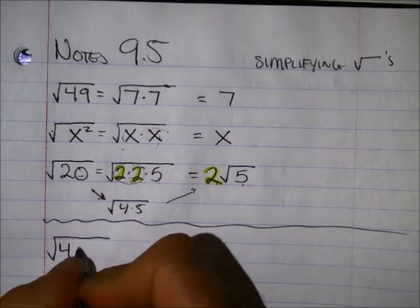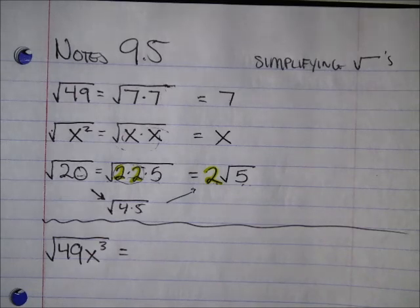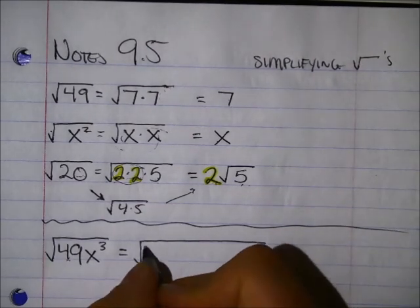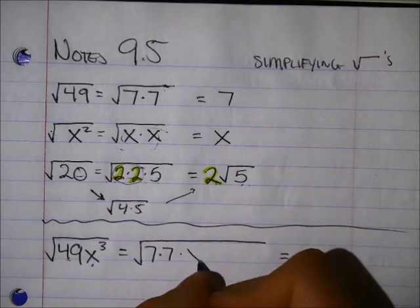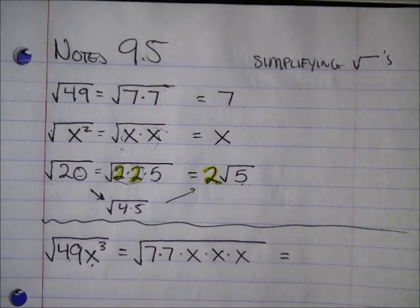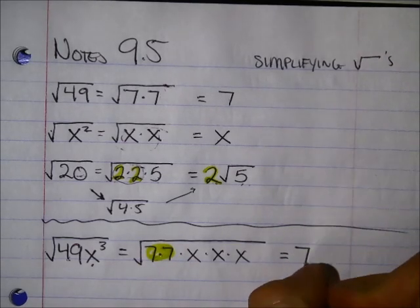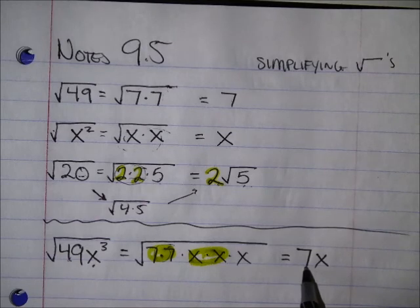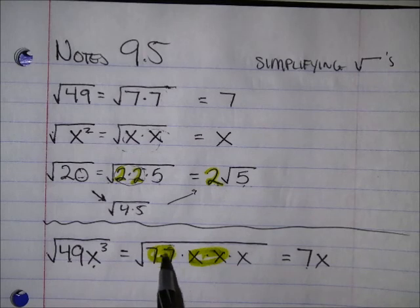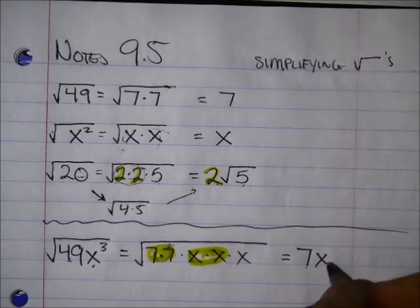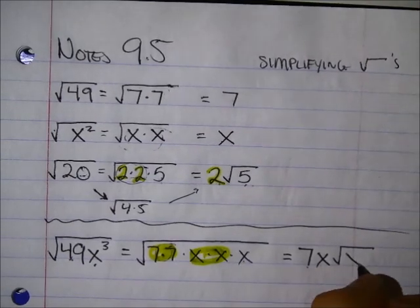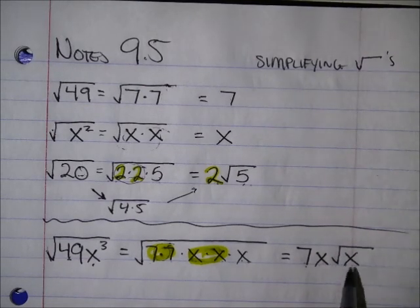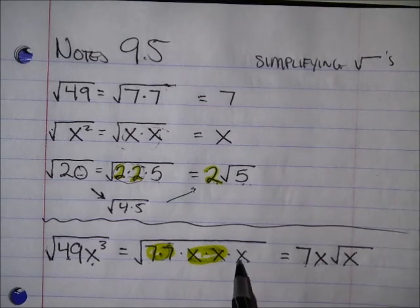I'm going to apply this to more complex square roots, like the square root of 49 x to the 3rd power. I'll break this up into all the little pieces and take out things that are pairs. 49 is 7 times 7. X to the 3rd is x times x times x. What are the pairs? There's a pair of 7's and a pair of x's. A pair of 7's comes out as a single 7, a pair of x's comes out as a single x. What's left over inside the square root? Just the x. So the square root of 49x³ equals 7x times the square root of x.